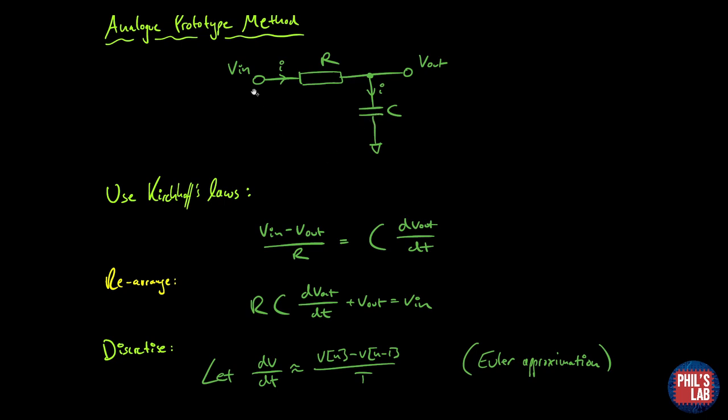V in minus V out over R is the current through the resistor. That's equal to the capacitor current which is C times the rate of change of the voltage across the capacitor which is dV out by dt. Then rearranging, getting all the V outs on one side and the V in on the other side, I have a differential equation. However this is in the continuous time domain and I want to go to the digital domain or the discrete time domain so I have to discretize.